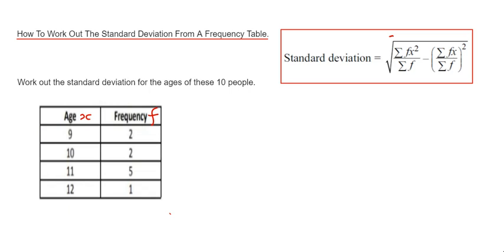We do this by multiplying the first two columns together and adding up this column. So 9 times 2 is 18, 10 times 2 is 20, 11 times 5 is 55, and 12 times 1 is 12. To get sigma fx, we add up this column: 18 plus 20 plus 55 plus 12 gives a total of 105.